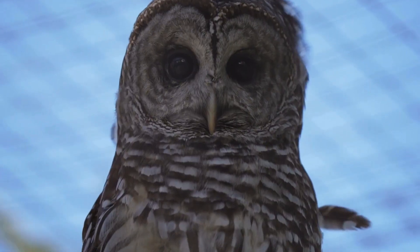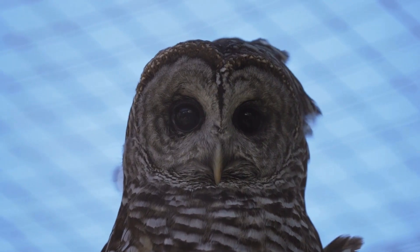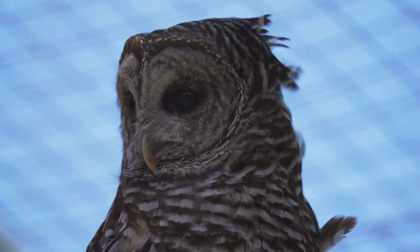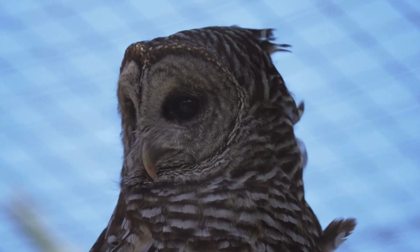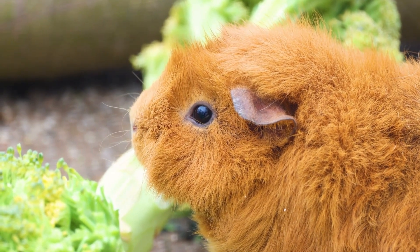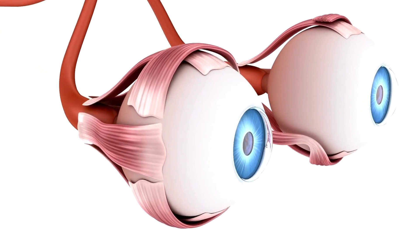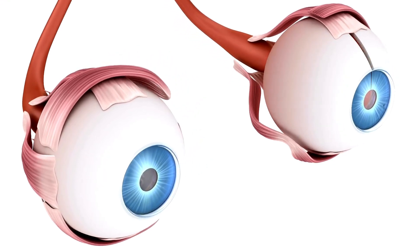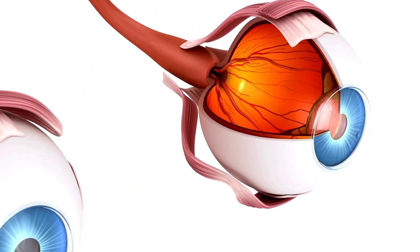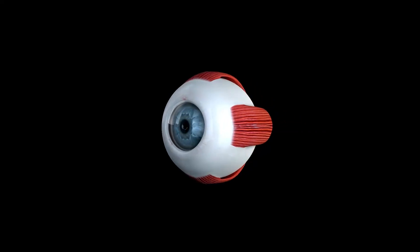Even if we could calculate our vision in megapixels, which some researchers have actually tried to do, it wouldn't really tell the whole story. Take, for example, the fovea. It's this tiny spot on our retina responsible for sharp central vision. It's like having a high-resolution zoom lens, but only for a very tiny area.